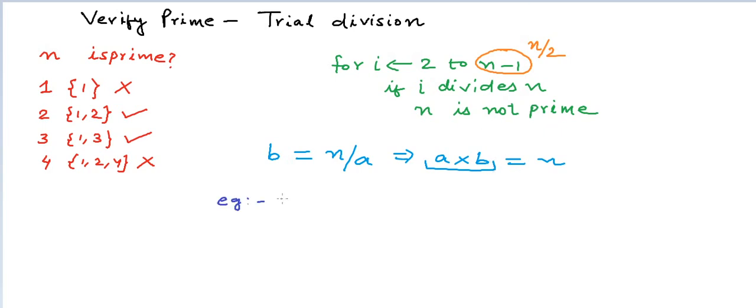So let us pick up a number 36 and try to see what all pair of factors it has. So the first factor of 36 is 1 and if we say that a is equal to 1, then b must be equal to 36 by 1 which is 36. Next pair of cofactors would be 2 and 36 by 2 is 18. 3 and 12. 4 and 9. 6 and 36 by 6 is 6. This is a special case where a is equal to b.